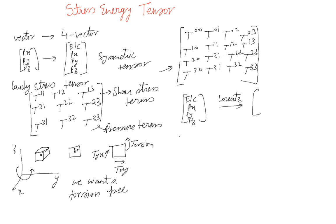For example, if you have some balls sitting at rest, they have no momentum. But if you do a Lorentz transformation to a moving frame, they develop momentum. Also, their energy density changes because of length contraction — moving objects undergo length contraction. So what was purely mass or energy density becomes mass plus momentum after a Lorentz transformation. Similarly, pressure and shear stress also change under a Lorentz transformation.